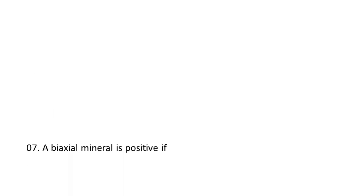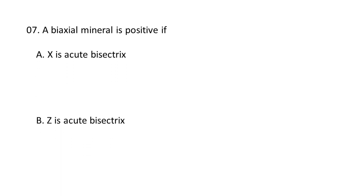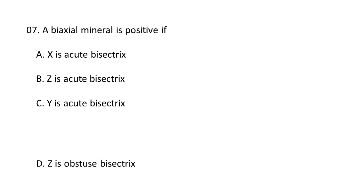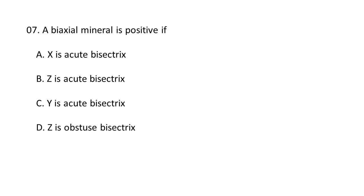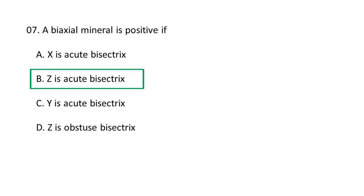Next question: A biaxial mineral is positive if — A. X is the acute bisectrix, B. Z is the acute bisectrix, C. Y is the acute bisectrix, D. Z is the obtuse bisectrix. A biaxial mineral is positive if Z is the acute bisectrix, meaning the acute angle between the optic axes is bisected by the Z refractive index direction. B is the correct option.